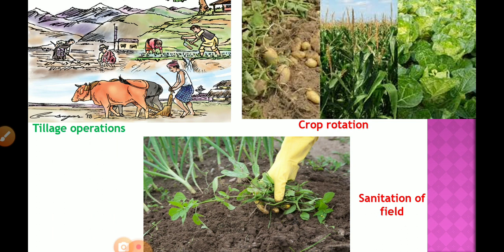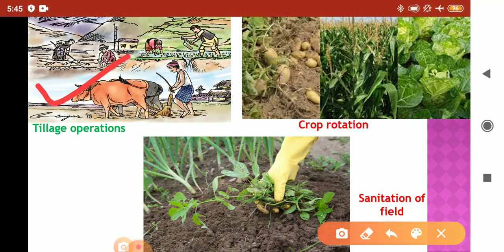Some pictures are shown here. The first picture shows a tillage operation where a man is starting the tillage. Some workers are collecting and removing unwanted or undesirable plants. Another picture shows crop rotation — alternate crops being grown, such as potato followed by maize followed by broccoli or cabbage. When farmers follow these practices, we can easily minimize the pest population.